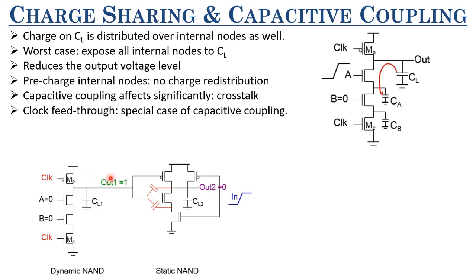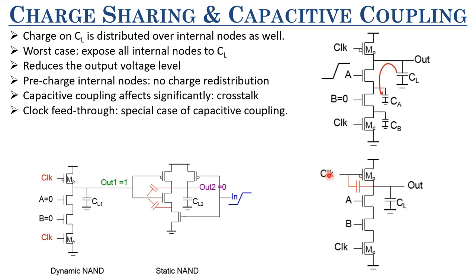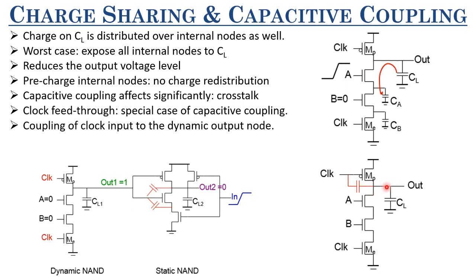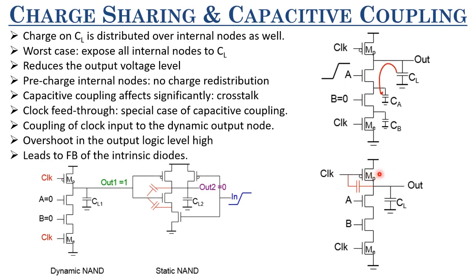There is also clock feed-through, a special case of capacitive coupling. In dynamic CMOS design during the pre-charge phase, if the node is floating and the clock transitions from zero to one, the P-MOSFET's gate-drain capacitance CGD directly couples the clock to the output. This causes the output voltage to overshoot beyond VDD. Because of this overshoot, the body terminal of the MOSFET may get forward biased, leading to all sorts of problems including CMOS latch-up.